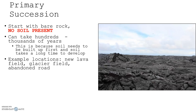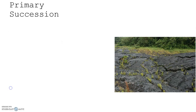Example locations for primary succession include new lava fields, glacier fields, and abandoned roads. There is much more secondary succession on our planet than primary succession, but the significance of no soil being present is important to emphasize.